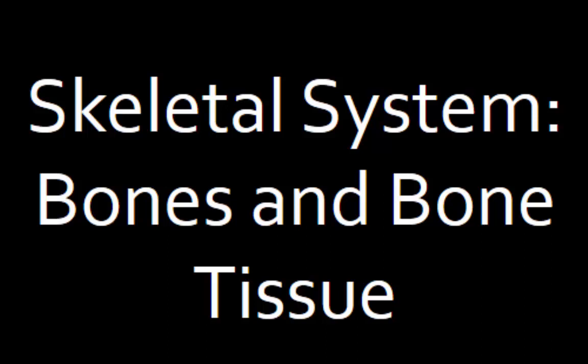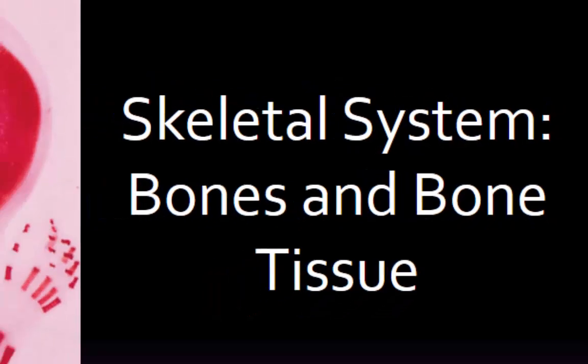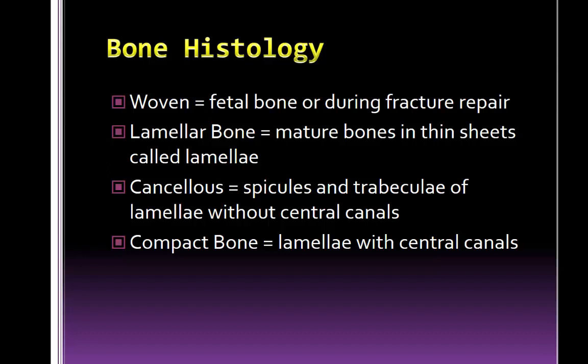Greetings. The focus of this tutorial will be to look at the differences between woven and lamellar bone and to discuss a little bit more what lamellar bone is. In addition, we will very explicitly investigate the anatomy of an osteon, which is the type of lamellar bone located in compact bone. This discussion begins with a brief conversation about bone histology and the types of bone that can be created by osteoblasts and osteoclasts.